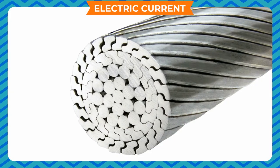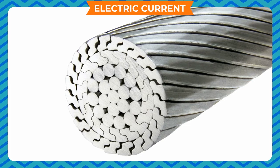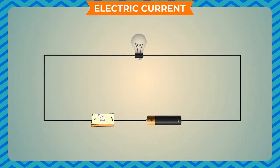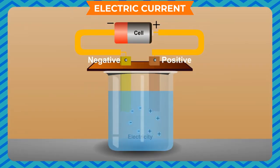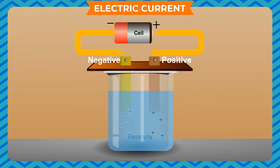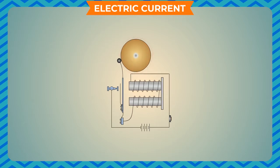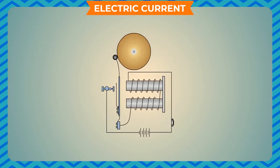For solids which are good conductors of electricity, the moving charges are a type of particles called electrons. In liquids, the moving charges are called ions. Ions are atoms or groups of atoms with positive or negative charge. These ions make it possible for electric current to flow.